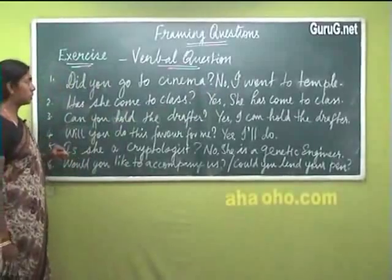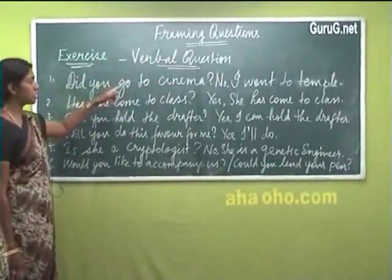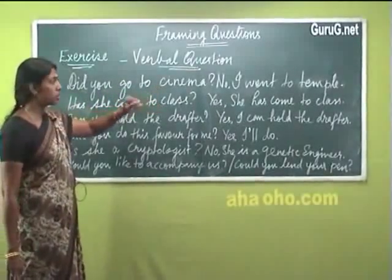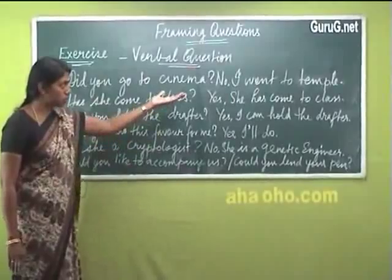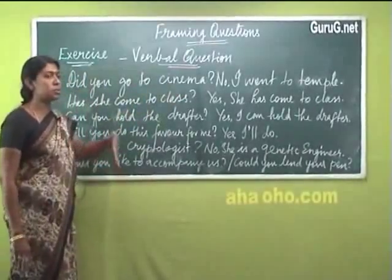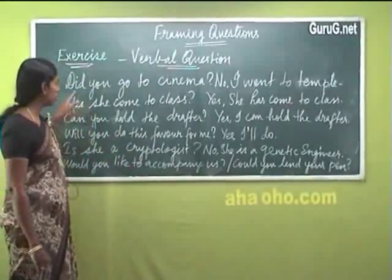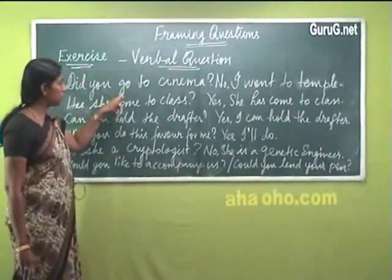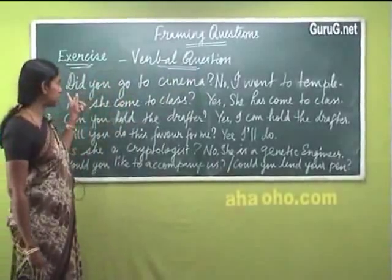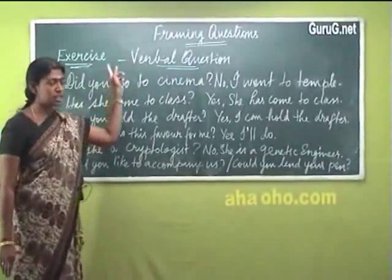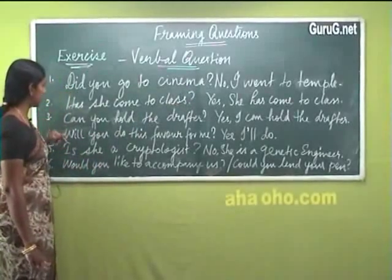'Did you go to cinema?' — the respondent answers 'No, I went to temple.' If the person had gone to the cinema, the answer would be 'Yes, I went to cinema.' Did + go gives 'went,' so the answer uses past tense. 'Did' indicates the past tense here, which is why the answer reflects the past tense as well.